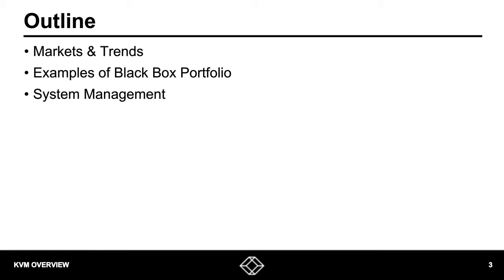I will start this webinar with an overview of the KVM market — where it is today and what people are buying. Then I will outline the key trends we see coming to this sector over the next three years. I will discuss how high-performance KVM is evolving to support these trends using Black Box products as examples. Finally, I will spend some time on the increasingly important trend of system management, driven by the need for efficient control of KVM and AV infrastructures, especially those requiring 24x7 operations. I hope you will gain a better insight into how the KVM market is evolving and changing its role in business operations.